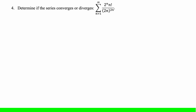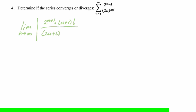Let's determine if this next series converges or diverges. There's a factorial in the numerator, which makes me think diverges, but I'll do the ratio test. Taking the limit: the (n+1) term is 2(n+1) times (n+1)! over (2n+2) to the (2n+2). Multiply by the reciprocal of the original: (2n) to the 2n times 2 to the n times n factorial. Everything is positive so no absolute value needed.